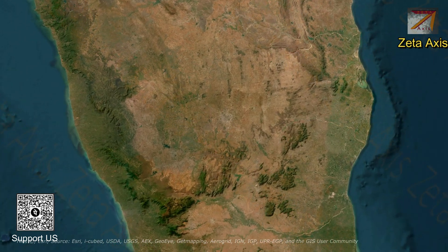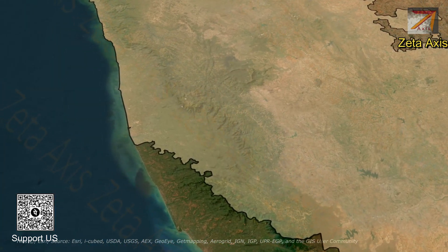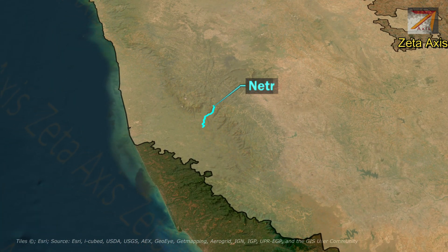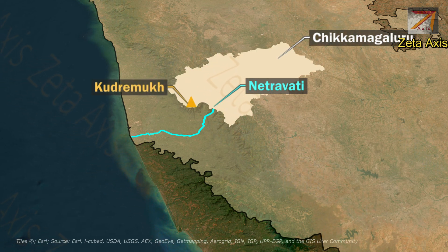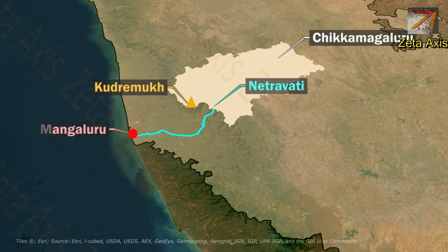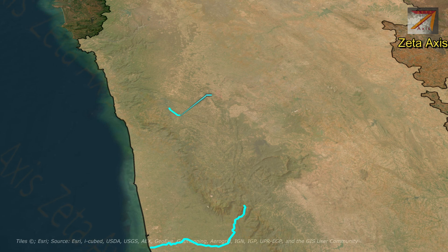Let's discuss important west-flowing rivers of Karnataka. The first is the Netravathi river, which originates from Kudremukh in Chikmagalur district of Karnataka and flows through Mangalore city before flowing into the Arabian Sea.